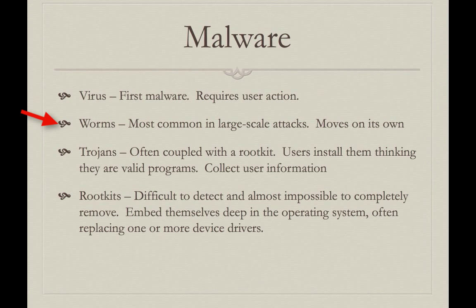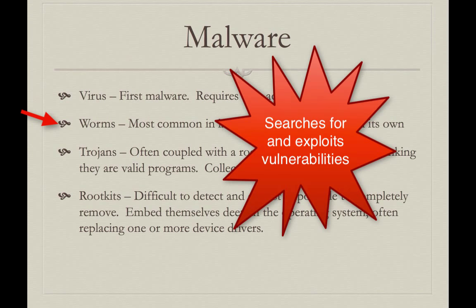Worms, on the other hand, can spread by themselves. Once a worm is on a system, on a network, it all by itself starts looking for other systems that have vulnerabilities it can exploit. When it finds those systems, it moves to them. The amount of time it takes for a worm to infect an entire network is very, very small.